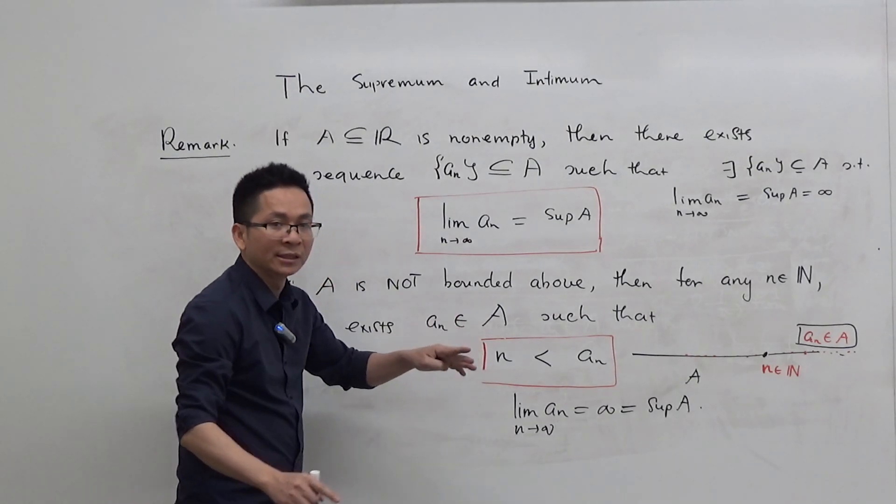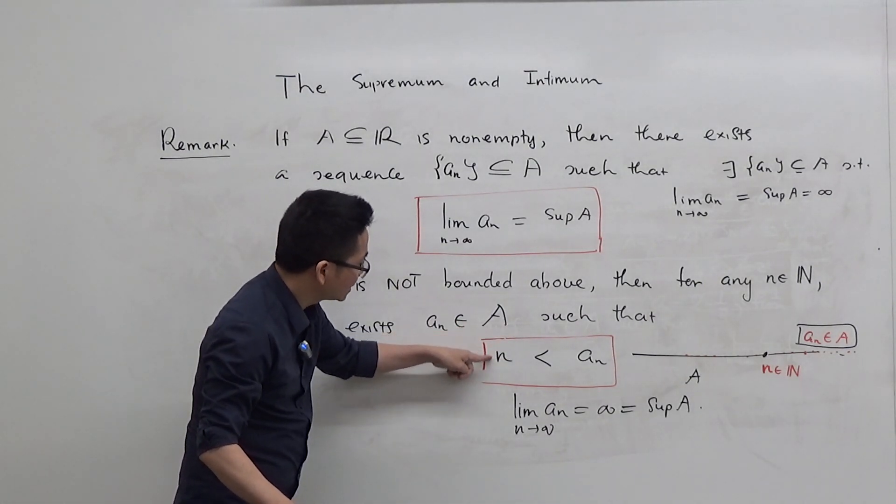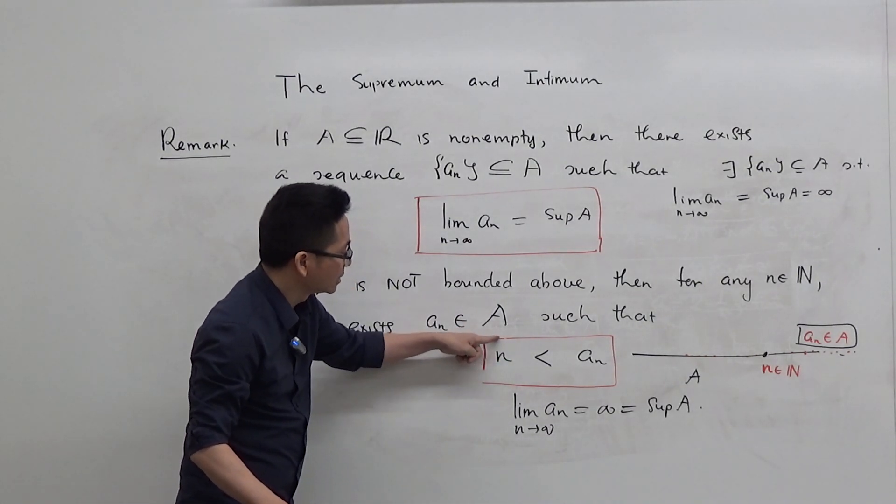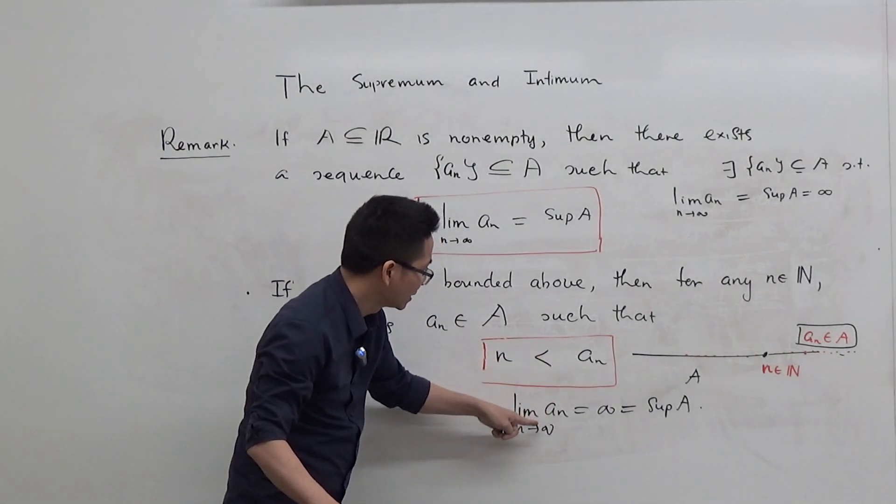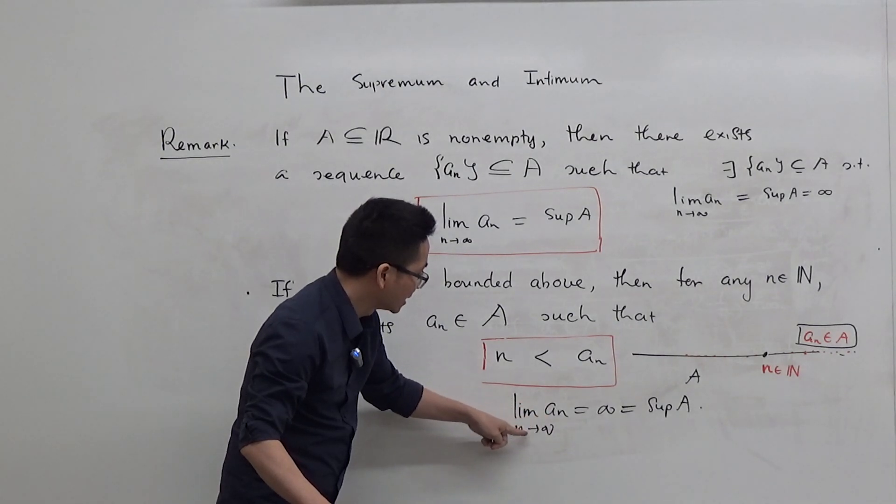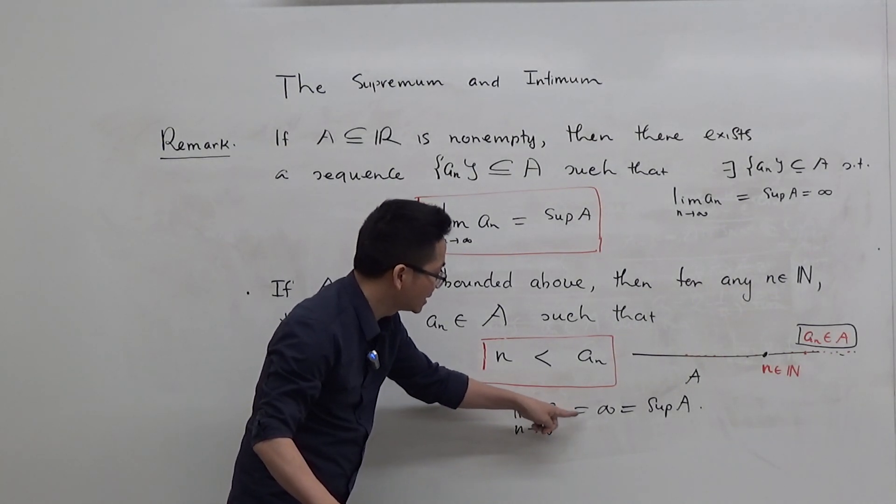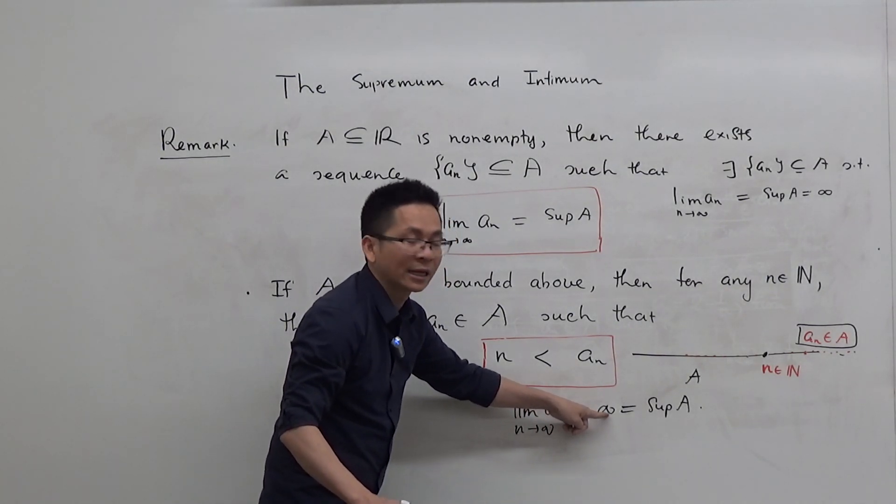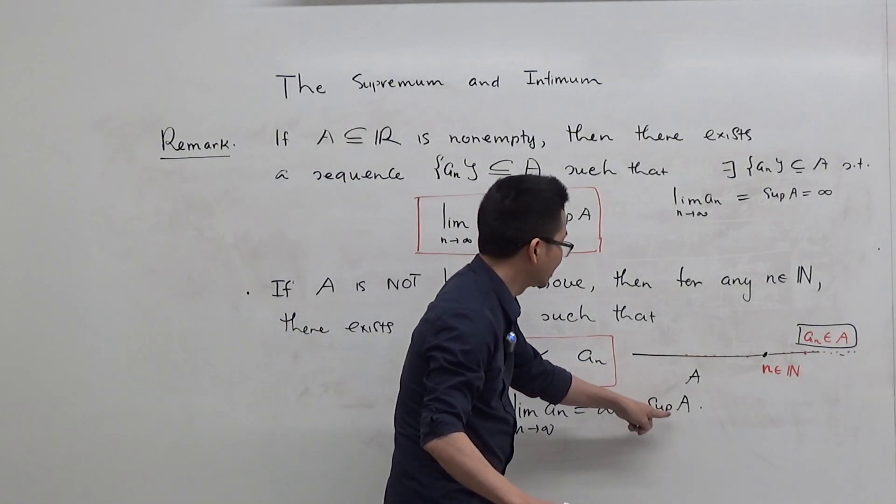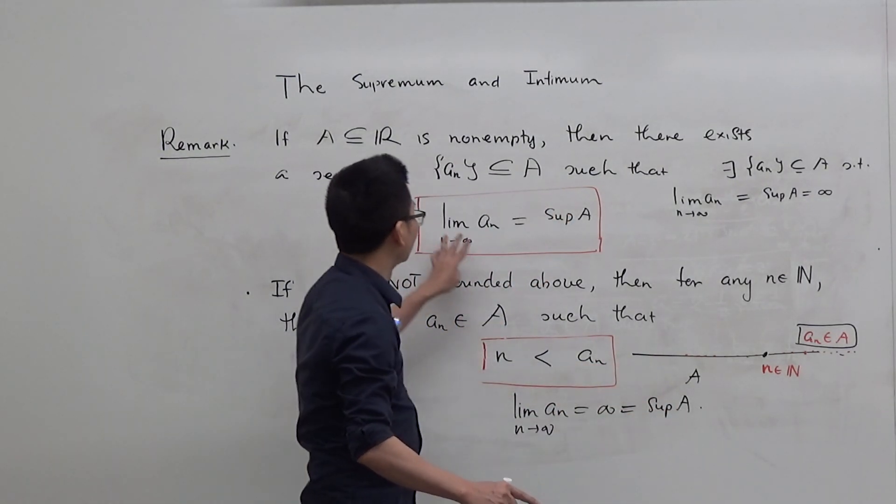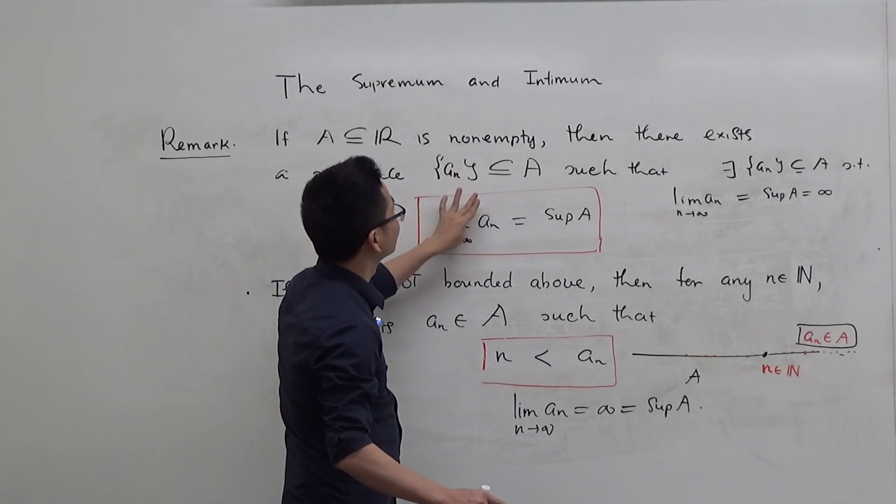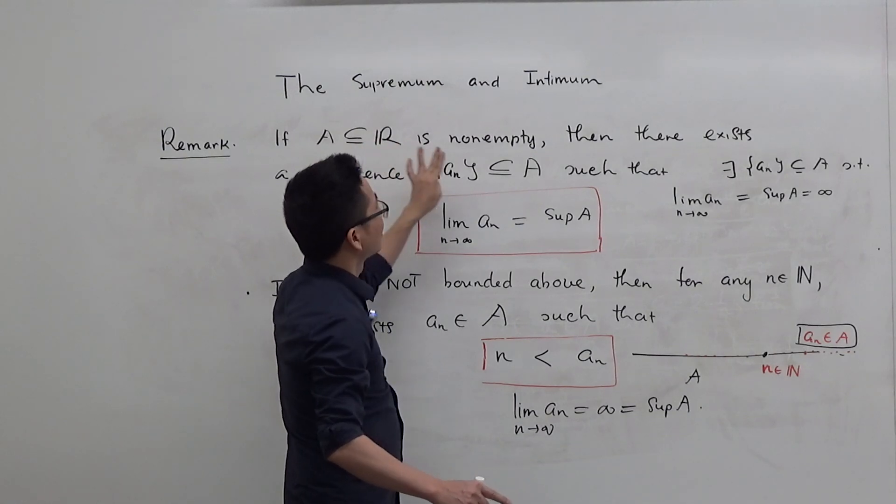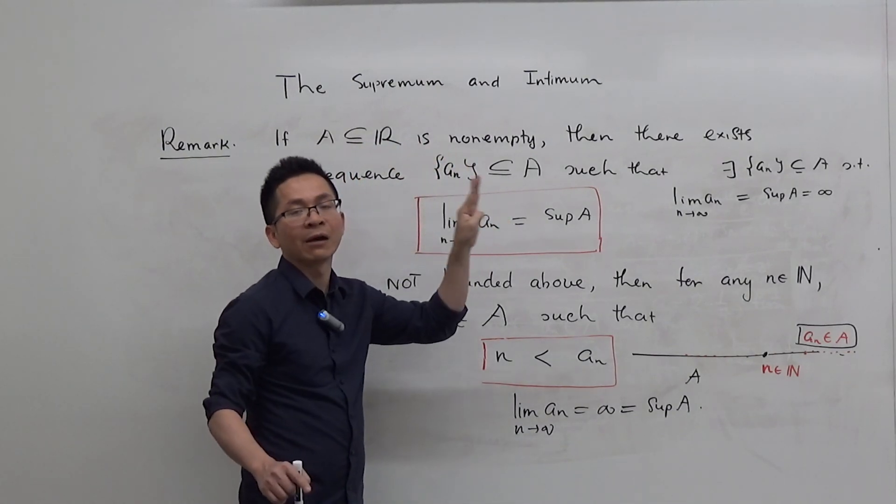Now, as n approaches infinity, this sequence diverges to infinity. So, by the comparison theorem, limit A_n as n approaches infinity is infinity. And because A is not bounded above, the supremum of A is infinity. So, this conclusion remains valid in the case where A is non-empty and not bounded above.